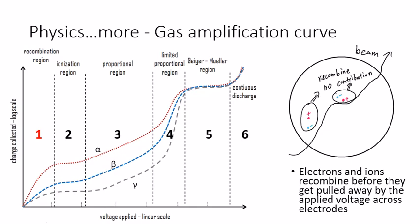As the beam goes through it, it liberates secondary electrons and ion pairs. As shown here, the blue dots are the electrons and the red dots are the ions.